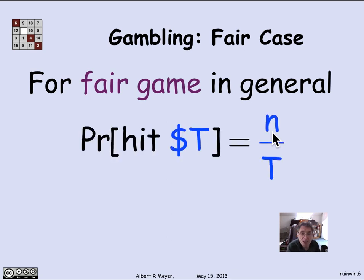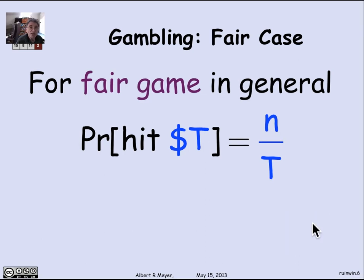In general, the theorem we will derive is that the probability of hitting the target T equals the quotient of your initial stake N divided by the target T in the fair game. This was illustrated in the previous two cases: 100 over 200 was a half, or starting with N = 500 over a target of 600 gives a 5/6 probability of winning.